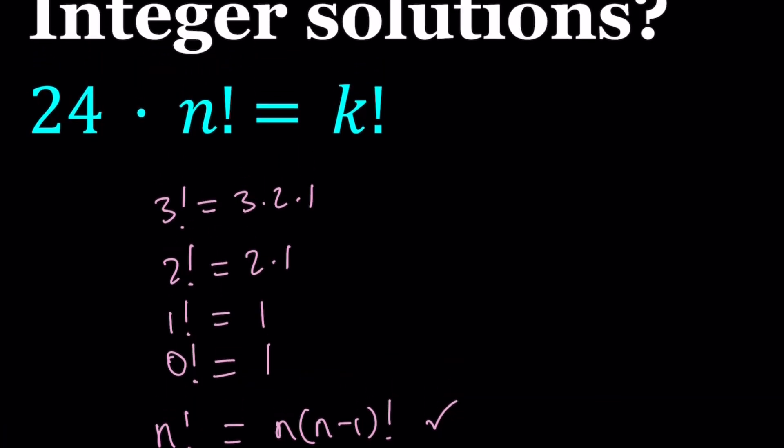So we have this interesting equation: 24 times n factorial equals k factorial, where k and n are positive or non-negative integers. We're not looking for fractions and stuff. Even though the graph I'm going to show you at the end will include all real values for n and k, which I replace with x and y.